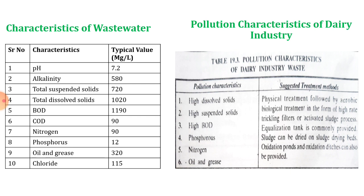The dairy industry wastewater has pollution characteristics of high dissolved solids, high suspended solids, high BOD, phosphorus, nitrogen, oil and grease. The suggested treatment is physical treatment followed by aerobic biological treatment in the form of high-rate trickling filter or activated sludge process. An equalization tank is commonly provided, sludge can be dried on sludge drying beds, and oxidation ponds and oxidation ditches can also be provided.